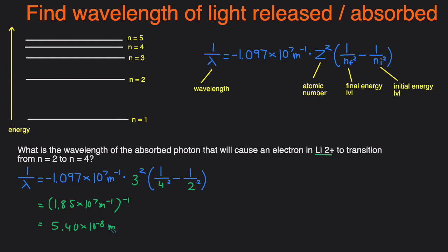and we get 5.4 times 10 to the negative 8 meters. And that is the final answer for the wavelength of the photon that's absorbed when the electron goes from n equals 2 to n equals 4 in lithium 2+. And that's how you can solve for the wavelength of light that's either absorbed or released. Just use Rydberg's formula.